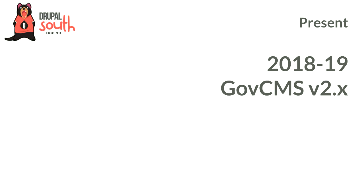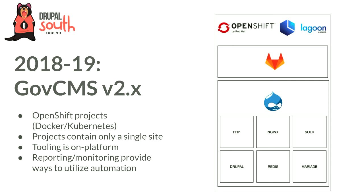GovCMS 2.x is where I came on board, about 12 months ago, and we had an entirely new architecture. It's all based on OpenShift Kubernetes and everything is single-site — no more multi-sites. With this comes a lot of advantages: we can run applications side by side without worrying about performance, we can run all our tooling inside the cluster, security is all there, and we don't need outside access to the system to run these tools.